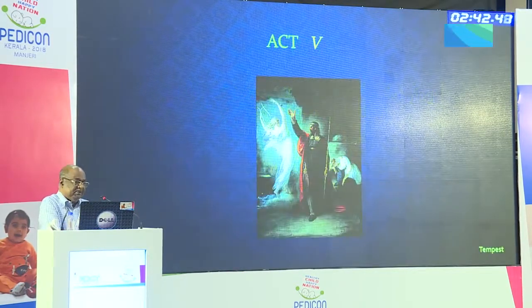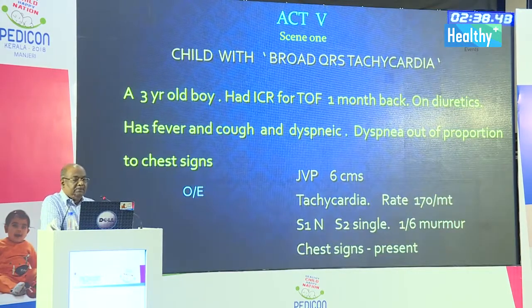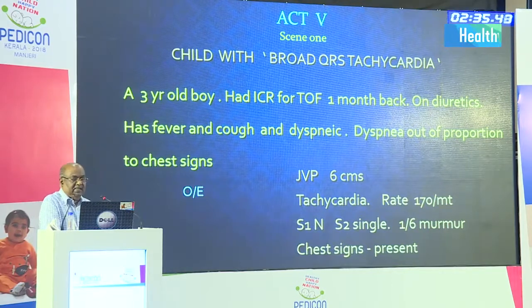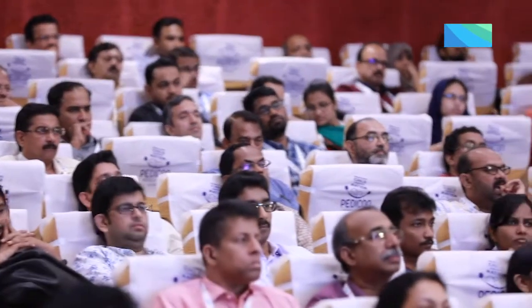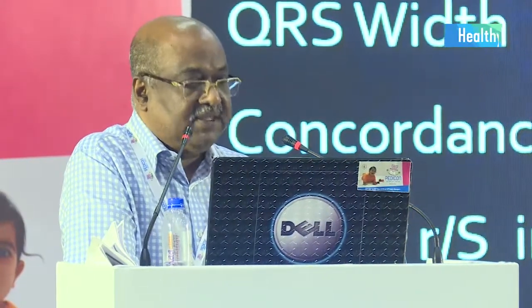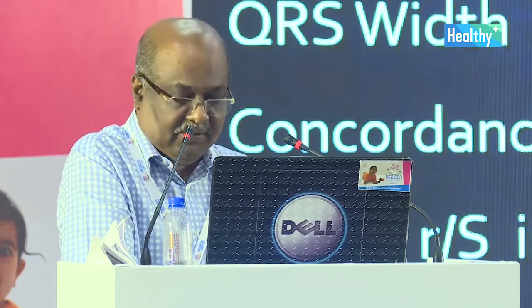Sometimes a broad QRS tachycardia may not actually be VT. We had a post-operative tetralogy of Fallot patient who came with broad QRS tachycardia — SVT with pre-existing right bundle branch block can mimic VT. We tried IV adenosine, which failed; amiodarone worked and converted the rhythm. Post-conversion ECG showed a pre-existing wide QRS complex — confirming broad QRS SVT with right bundle branch block, not VT.